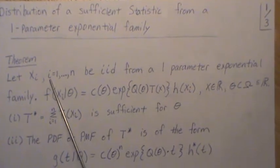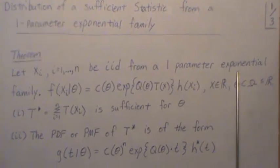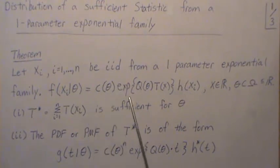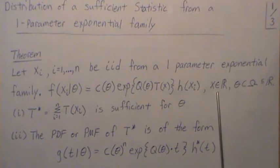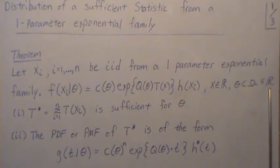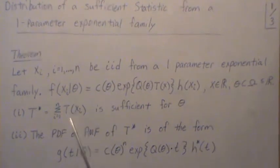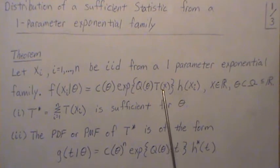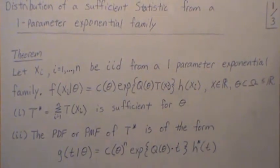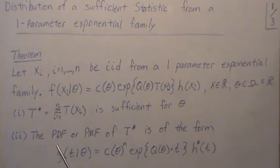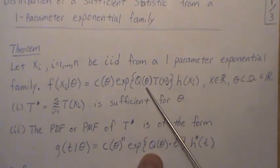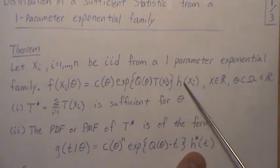The theorem says: let xi, i goes from 1 to n, be iid from a one-parameter exponential family. The distribution — PMF or PDF — can be written in this form here, where the support does not depend upon theta, and theta lives in some omega space which is a subset of the real numbers. Then t star, which is the sum of these t of xi's, is sufficient for theta, and the PDF or PMF of t star is of this form here, where this is raised to the nth power, this is just little t, and then this is some function of just t.